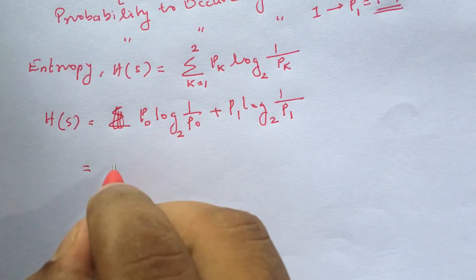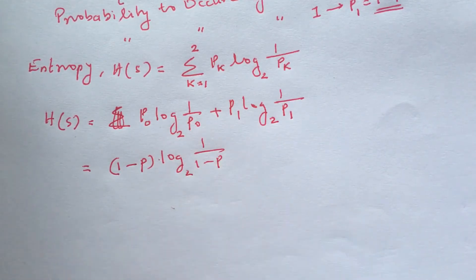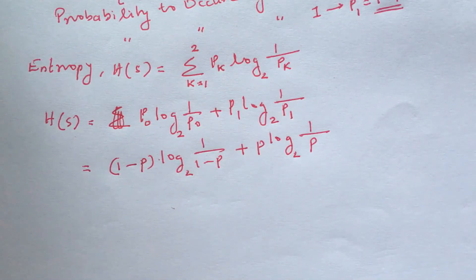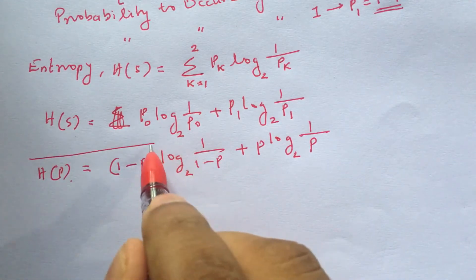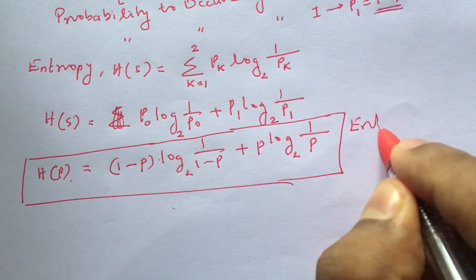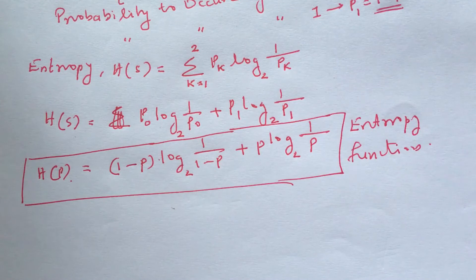This is equal to: substituting p0 = 1 minus p, we get (1 minus p) times log base 2 of 1 by (1 minus p), plus p1 = p, so plus p times log base 2 of 1 by p. The total probability is 1, so the symbol probabilities sum to 1.